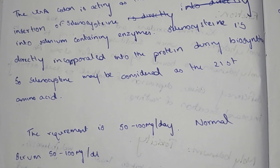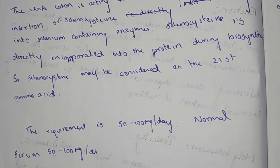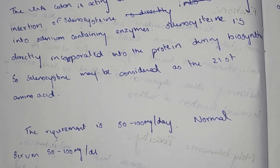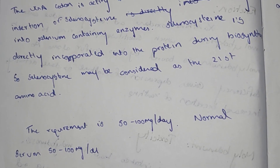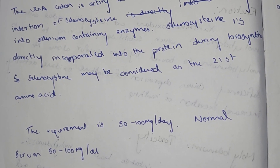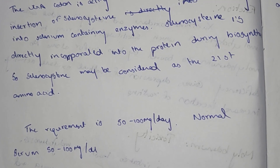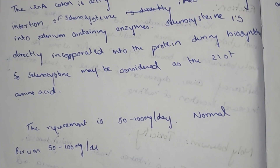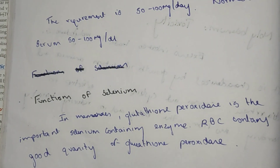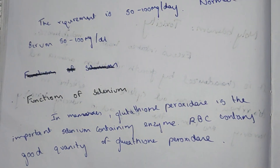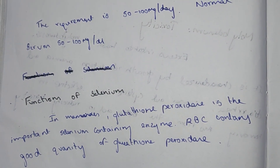The daily requirement of selenium is 50 to 100 micrograms per day. The normal serum level is 50 to 100 micrograms per deciliter. The most important function of selenium is in glutathione peroxidase, a selenium-containing enzyme.